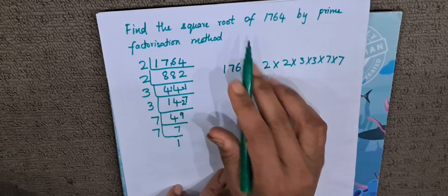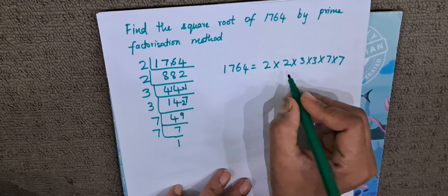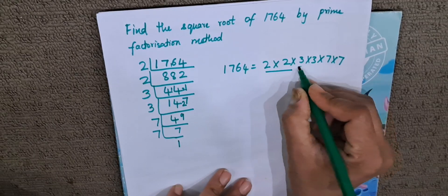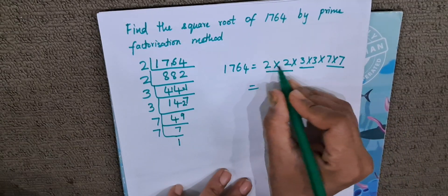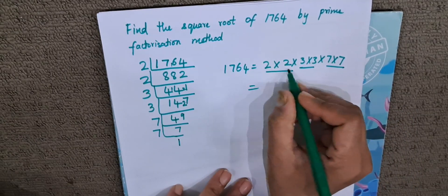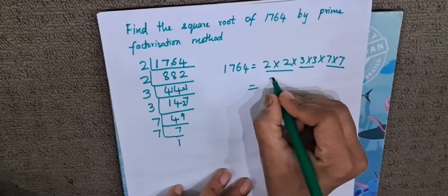Now to find the square root, we will make them a pair and then take one among the pair. 2 and 2, pair of 2 and 2 will become 1. We will take 1 number among that.